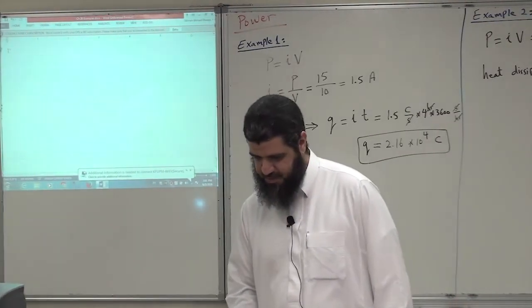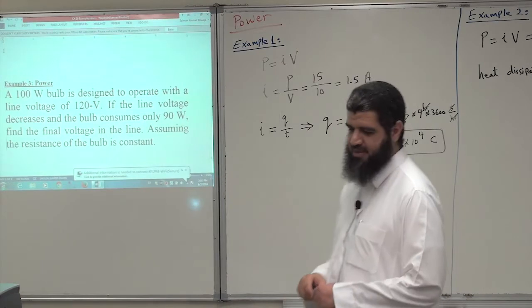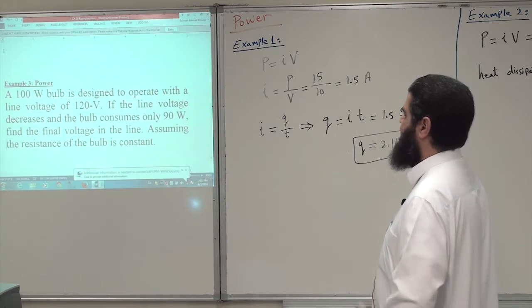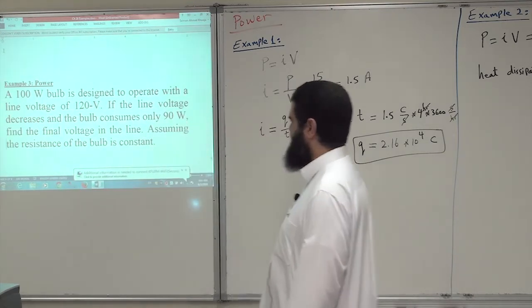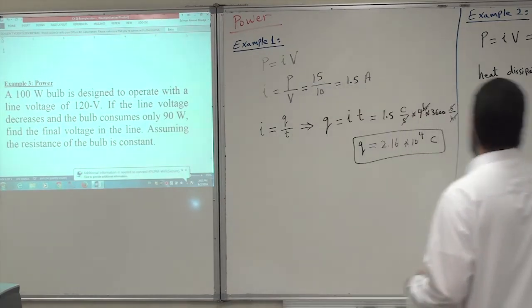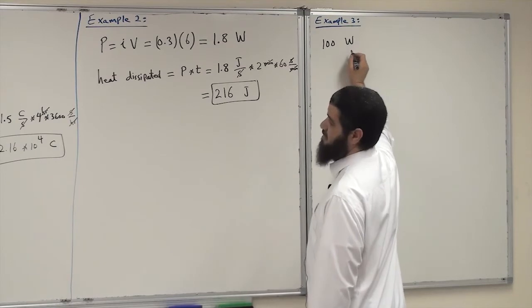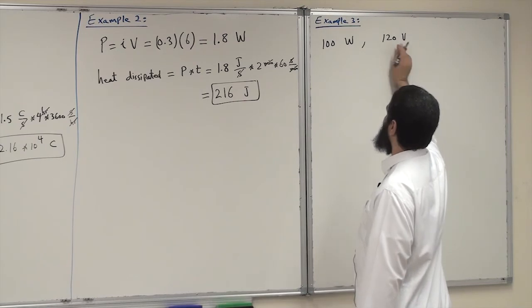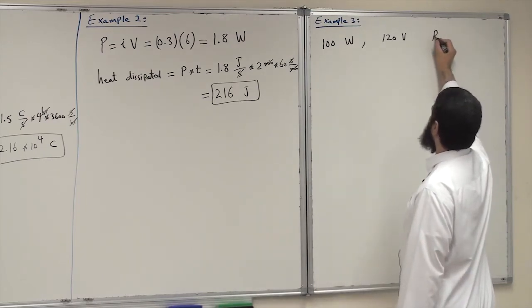Proceed quickly to the last example. Example number three: a 100 watt bulb is designed to operate with line voltage of 120 volts. If the line voltage decreases and the bulb consumes only 90 watts, find the final voltage, assuming the resistance is constant. So it was designed to consume 100 watts working with 120 volts. If 120 volts is applied, we will get 100 watts of power and resistance is constant.